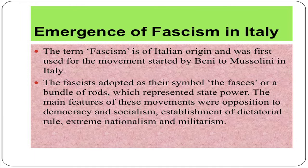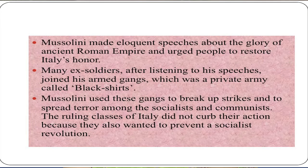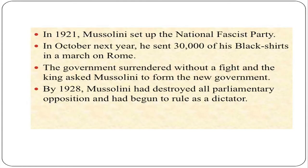The term fascism is of Italian origin and was first used for the movement started by Benito Mussolini in Italy. The fascists adopted as a symbol the fasces — a bundle of rods — which represented state power. The main features of these movements were opposition to democracy and socialism, establishment of dictatorial rule, extreme nationalism and militarism. Mussolini made eloquent speeches about the glory of ancient Rome and urged people to restore Italy's honor. Many ex-soldiers, after listening to his speeches, joined his armed gangs — a private army called the Blackshirts. Mussolini used these gangs to break up strikes and to spread terror among the socialists and communists. The ruling classes of Italy did not curb these actions because they also wanted to prevent a socialist revolution. In 1921, Mussolini set up the National Fascist Party.